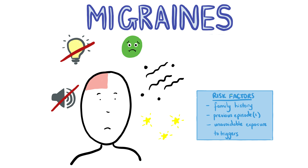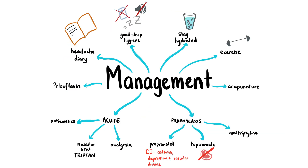Migraines can last between 4-72 hours. Risk factors for developing migraines include family history, a previous migraine, unavoidable exposure to triggers such as stress, menstruation, irregular or inadequate sleep, dehydration, exercise and weather changes. On examination, there will be no neurological signs. The first step of management is conservative. Advise the patient to create a headache diary, which can help identify triggers and avoid them.